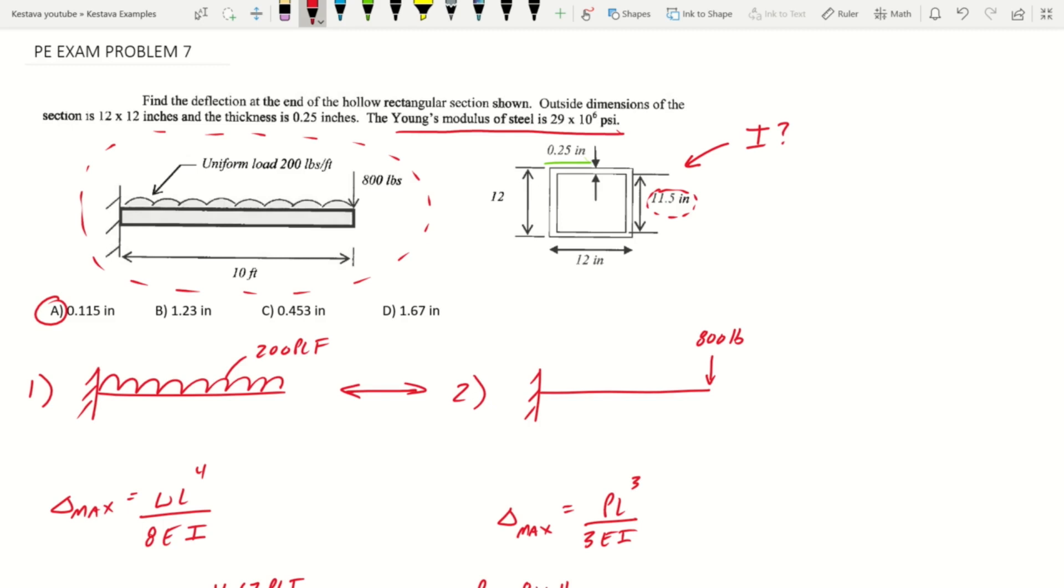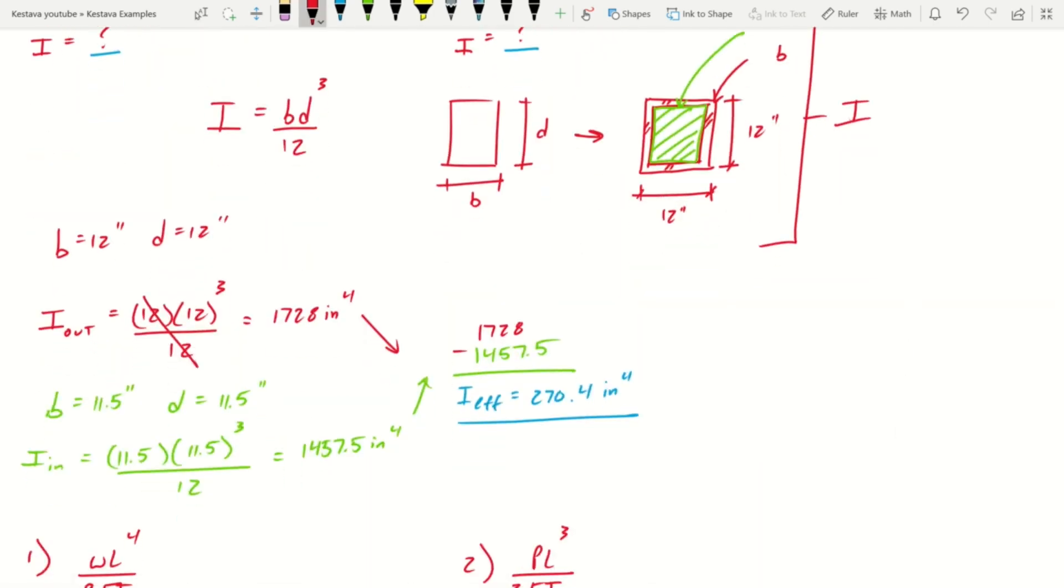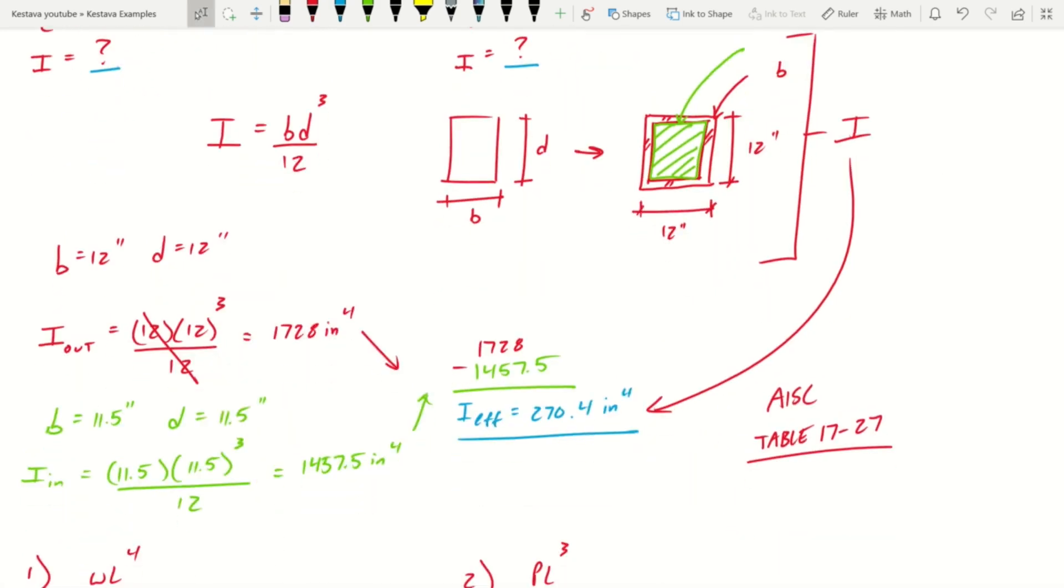One thing I didn't mention in case you're wondering, for this member here to find your effective moment of inertia, that equation can be found in table AISC, that's steel manual, table 17-27. It gives you an equation for hollow rectangles which, boom, that's what we got. Head there in your steel manual, really really helpful, it's in the back of the book.